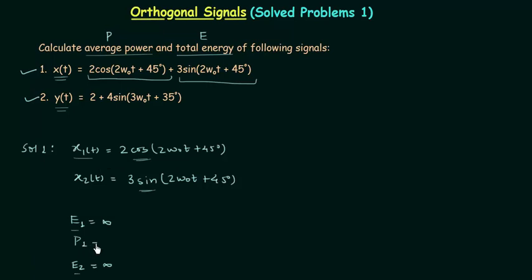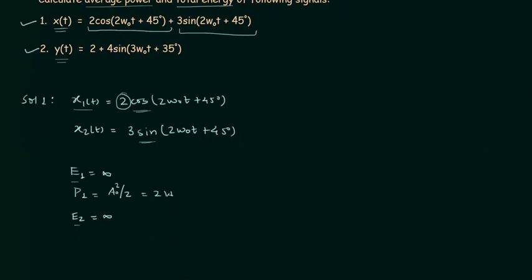Let's calculate the average power of signal x1(t). Average power p1 = a₀²/2, where a₀ = 2, so p1 = 2 watts. Now for signal x2(t), p2 = a₀²/2, where a₀ = 3, therefore p2 = 4.5 watts.